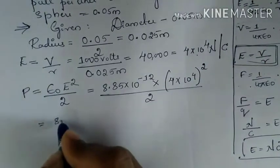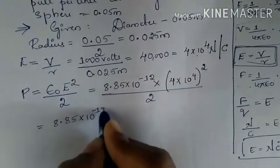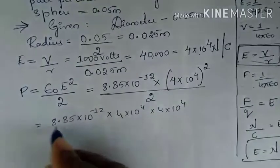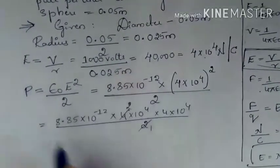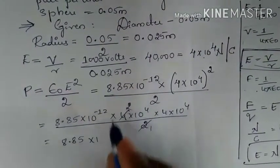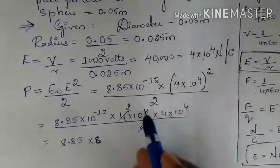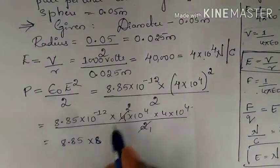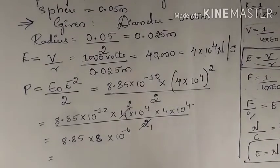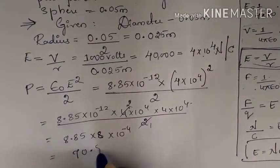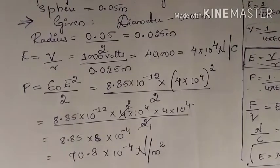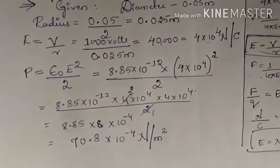Substituting: P = (8.85 × 10⁻¹²) × (4 × 10⁴)² / 2 = 8.85 × 10⁻¹² × 16 × 10⁸ / 2 = 8.85 × 8 × 10⁻⁴. This gives 70.8 × 10⁻⁴ Newton per meter square.